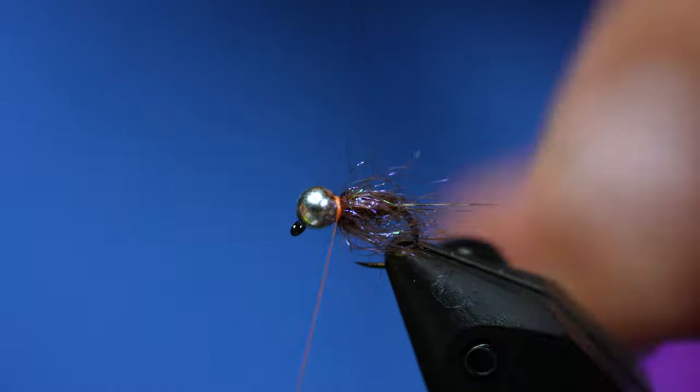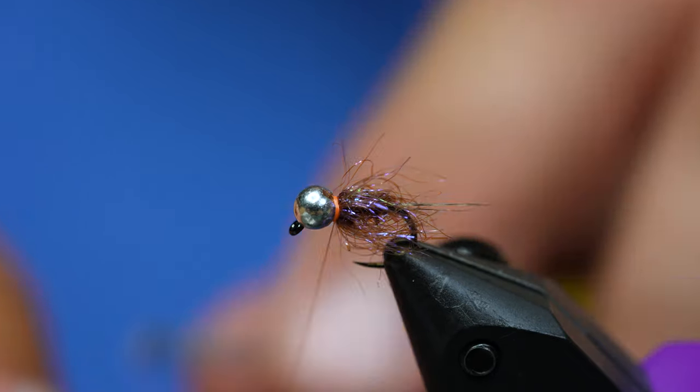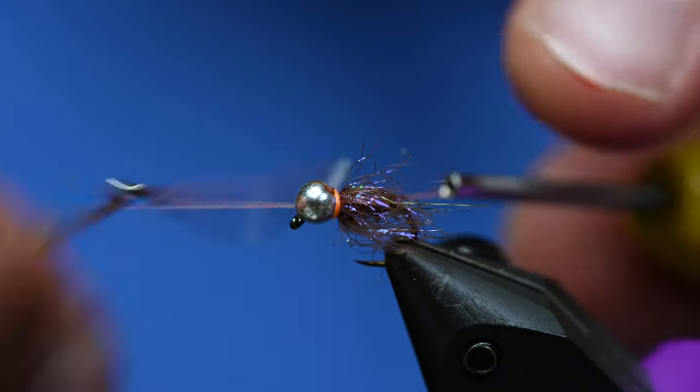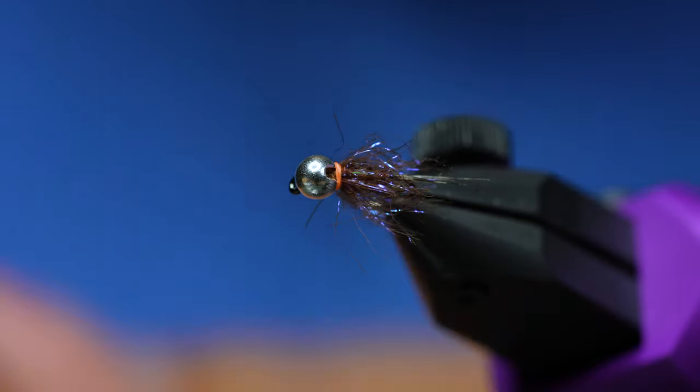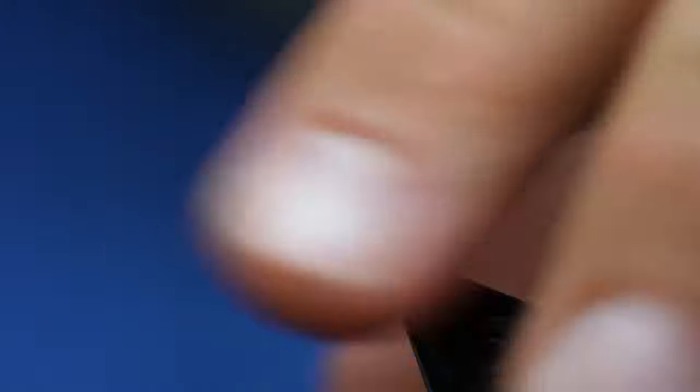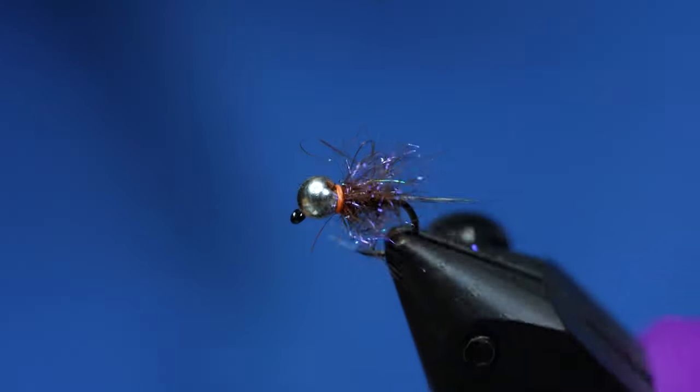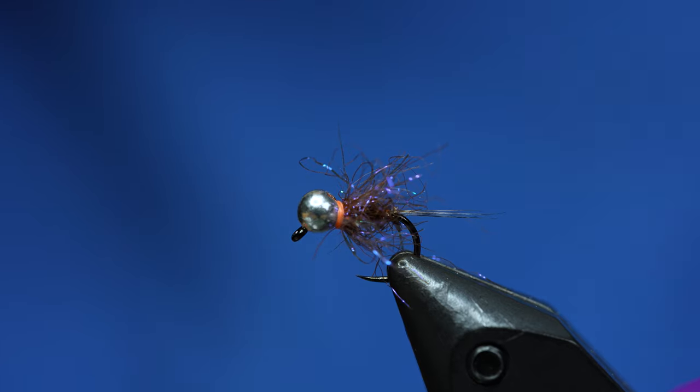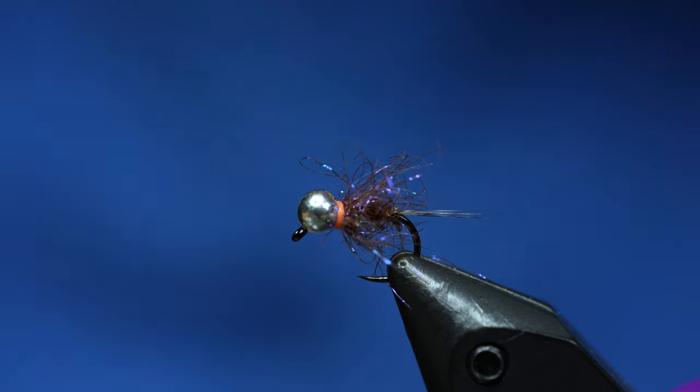And then to finish the fly I'm just going to put a few more turns of thread. Make a little bit of a hot spot. You can add super glue, head cement, or whatever you want. But anyway that's a super easy fly. You can do it in a whole bunch of different colors and it absolutely crushes fish. Except for Brigham. He sucks.